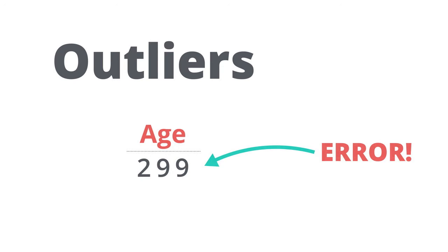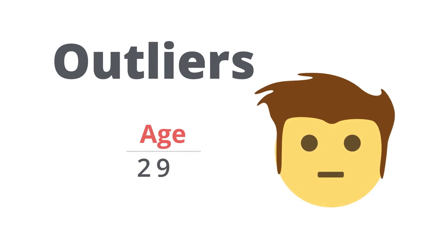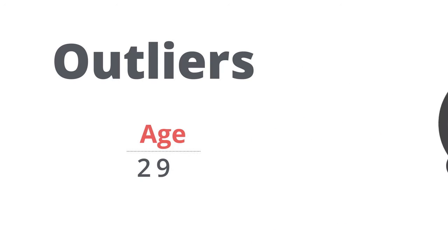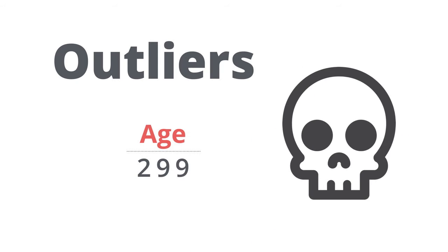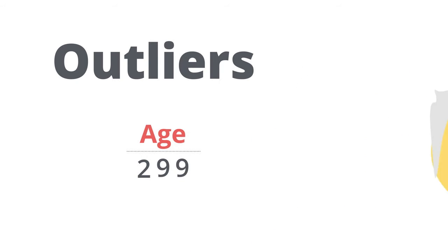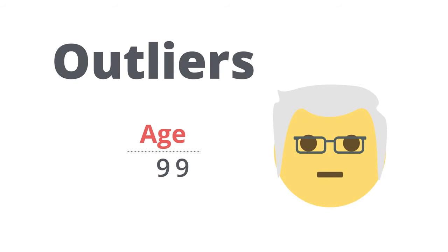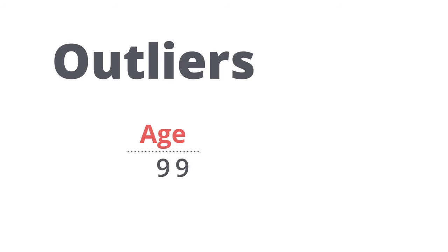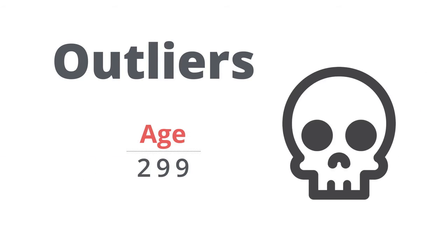Possibly the correct age was 29 and an extra 9 was added. Or maybe there really was a 99-year-old student attending community college, and someone mistakenly put a 2 in front of the correct value.